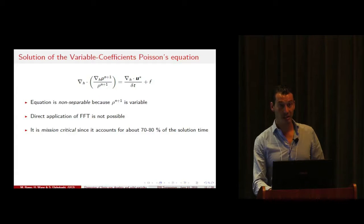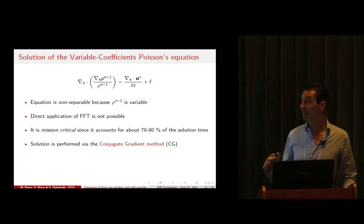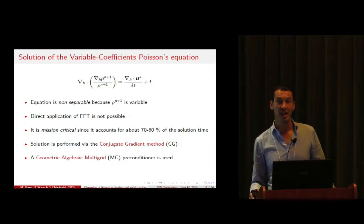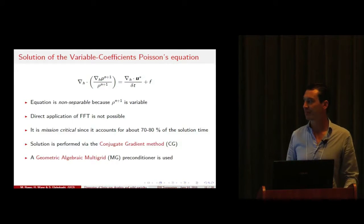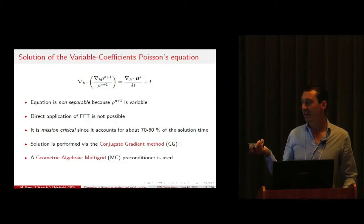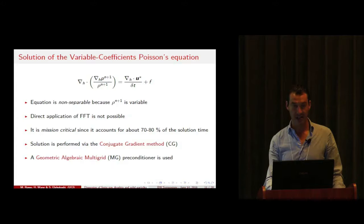In our simulation we found that an efficient way to solve it is by using a conjugate gradient method coupled with a geometric multigrid. In the literature you typically find algebraic multigrid or Hyper, but we found that with a well-tuned geometric multigrid the solution is very cheap and sufficiently fast.